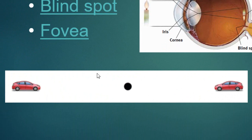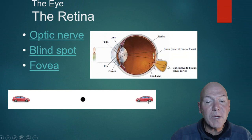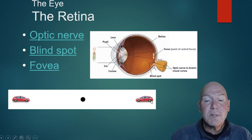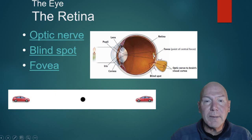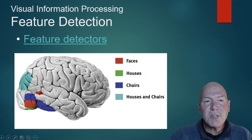We'll demonstrate the blind spot in class by staring at one object while another disappears. When something is focused on our blind spot, our brain fills in whatever was in the background — so you'd see white in that situation. The fovea is the point where we want to focus our image on the retina; around it are the cones, and around the cones are the rods.